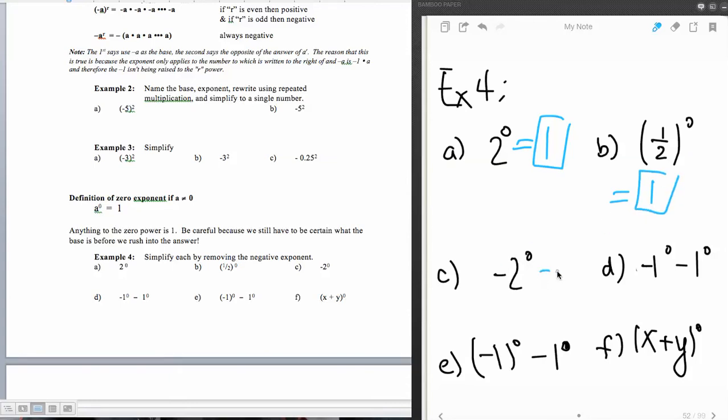Aha, tricky one. This one says the opposite of 2 to the zero power. That is going to be a negative one, right, because this is the opposite of, and this is 2 to the zero power, so a negative one.